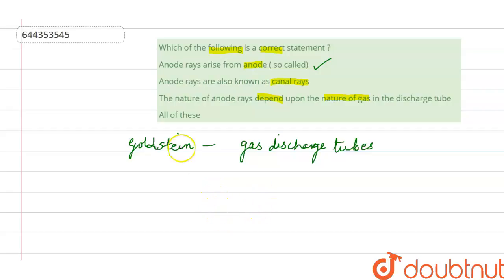Anode rays contain positively charged particles called protons. So therefore the first statement is correct. Now the second statement, anode rays are also called as canal rays, even this is correct.